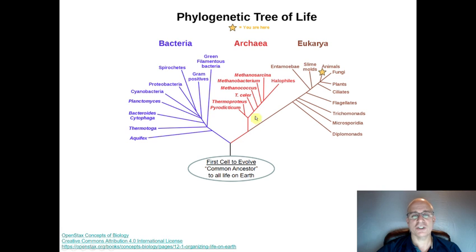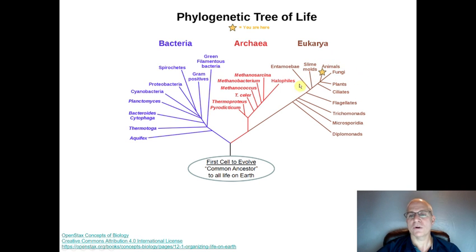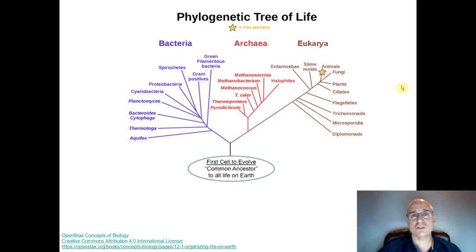Coming off in another direction, we see archaea — bacteria-like organisms that were able to tolerate really extreme conditions and very little oxygen. As time went on, we see more and more changes taking place, bringing us to the domain Eukarya, which represents a lot of the organisms we would be more familiar with: the animals, the plants, the fungi, and such. So this phylogenetic tree is showing how all living things are related to the very first cell.